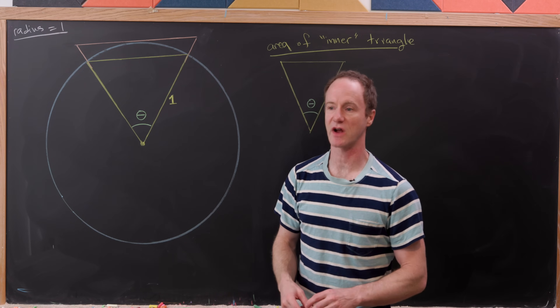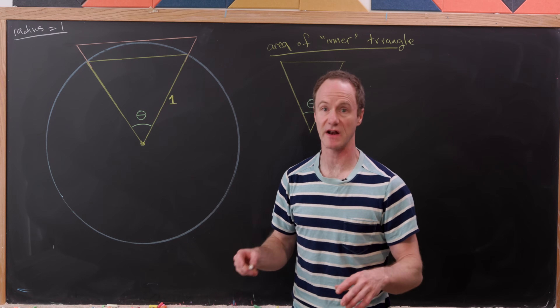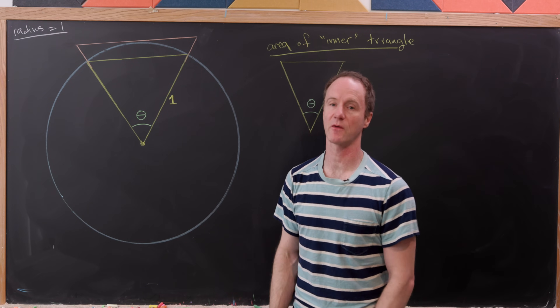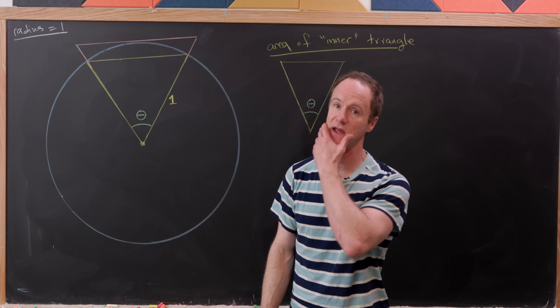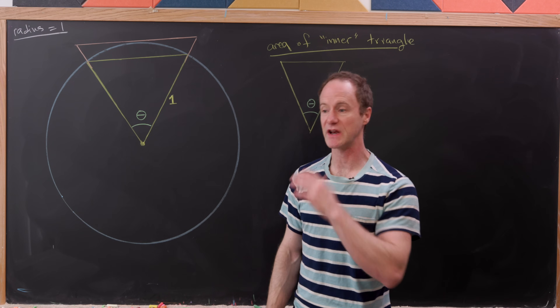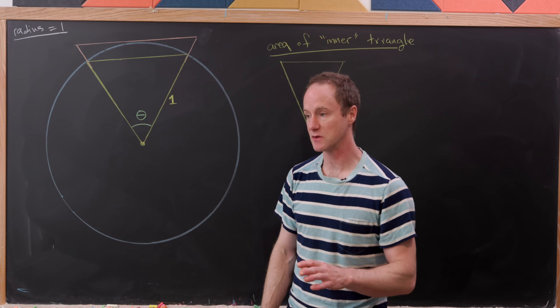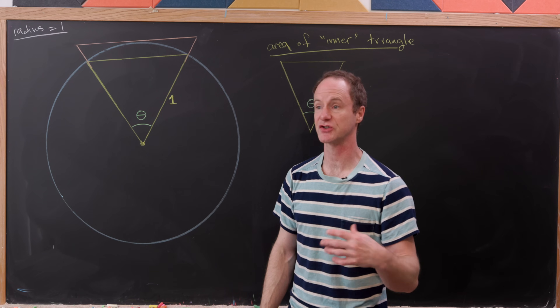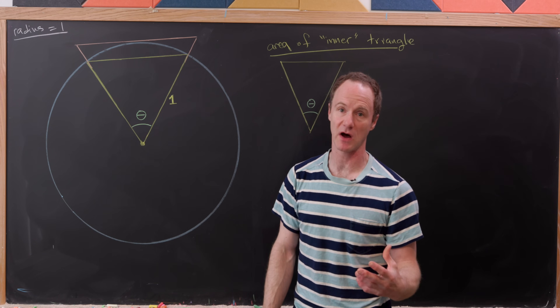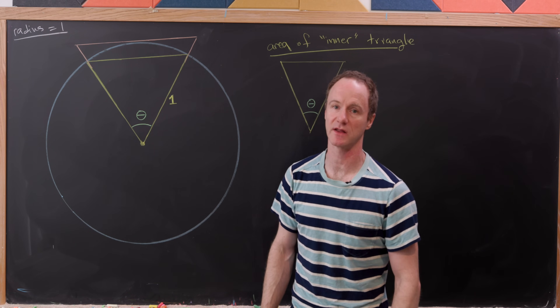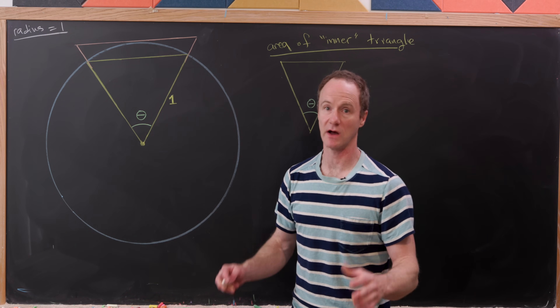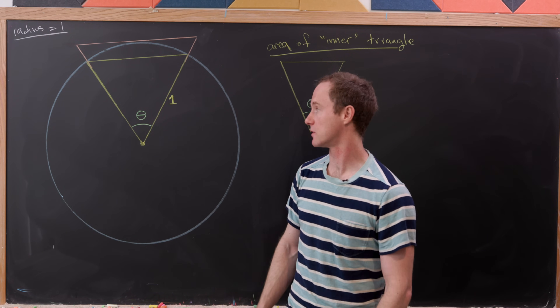Today we're going to look at a really nice strategy to generate a family of approximations of pi. We're going to do that by looking at circumscribed polygons and inscribed polygons in a circle.